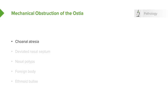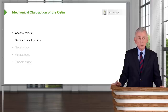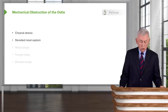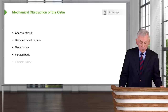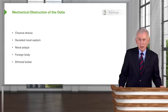There can be mechanical obstruction of the ostia, as some people are born with choanal atresia — one of the important exams of a newborn is to make sure the external nares are completely patent. Some people have deviated nasal septa, which is a fairly common problem. Nasal polyps occur as well. Little kids can get foreign bodies in their nose, and some large bullae may form in the ethmoid sinuses that can block the ostia.